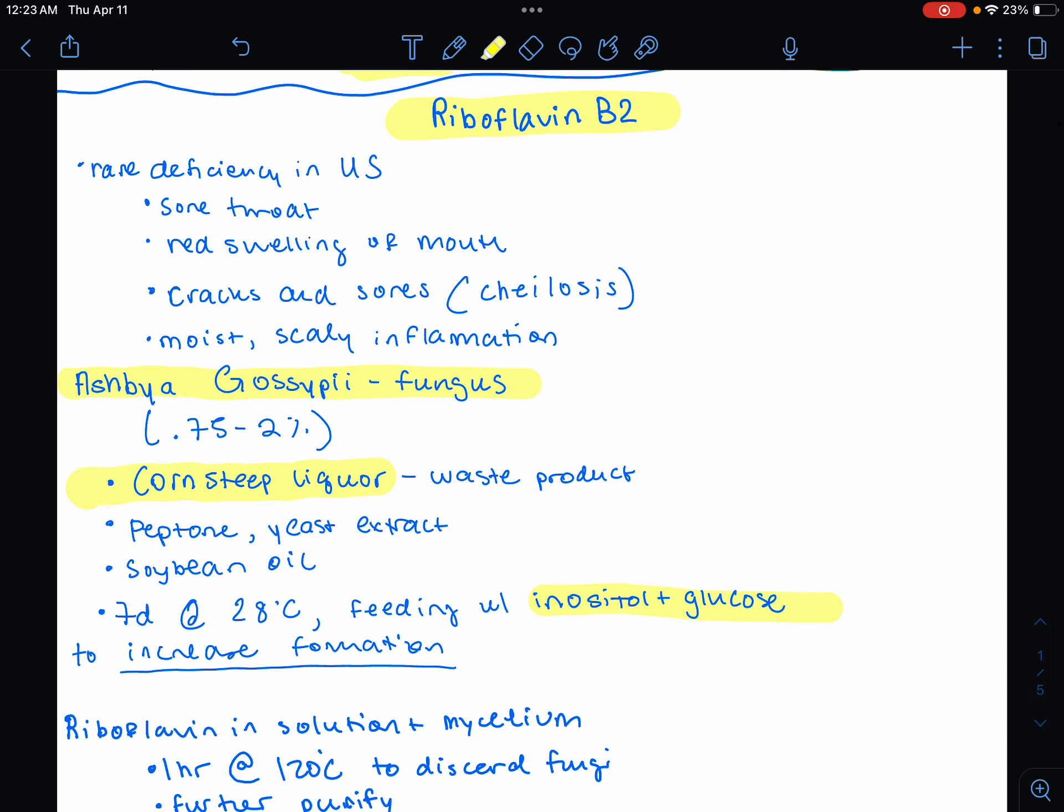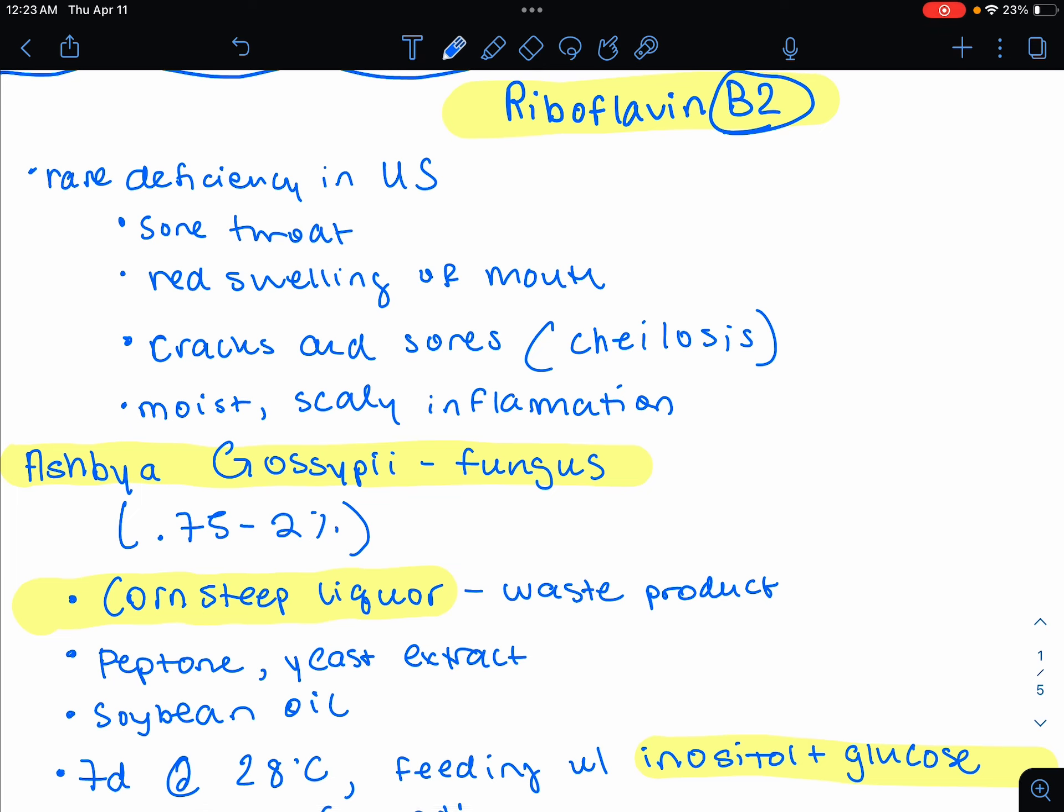Let's talk about vitamins made by microbes. The first one that the professor wanted us to look at was riboflavin. This is vitamin B2. The deficiency of it is very rare in the U.S. However, you could get these symptoms: sore throat, red swelling of mouth, cracks and sores. This is known as chelosis. And then you also have moist, scaly skin on the tongue and inflammation.